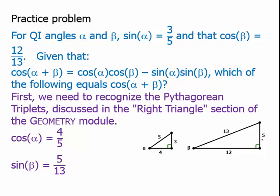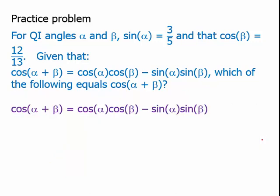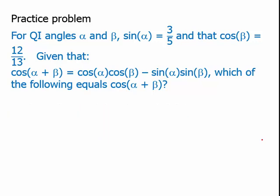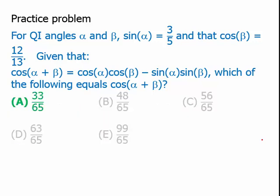Now that we have these four values, we can plug into the formula. They give us the formula: cosine of alpha plus beta equals cosine alpha cosine beta minus sine alpha sine beta. So we plug all these values in, multiply, we get 48 sixty-fifths minus 15 sixty-fifths, which is 33 sixty-fifths. And answer choice A is the answer.